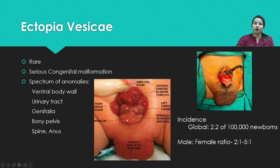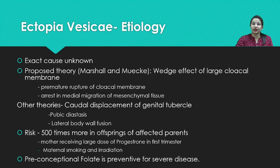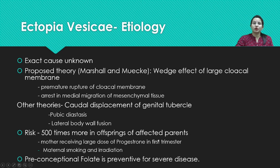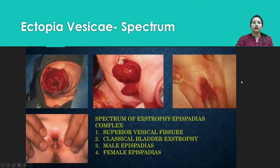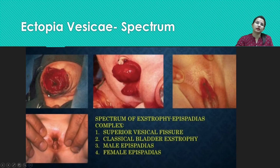These patients also have bifid or splayed glans with epispadias and a dorsally curved penis with a ventrally hooded prepuce. The scrotal folds are displaced, and there is an anteriorly placed anal opening. The exact cause is not known; proposed theories include the wedge effect of the large cloacal membrane or caudal displacement of the genital tubercle. The risk is 500 times greater in offspring of affected parents. Preconceptional use of folate is helpful in preventing ectopic vesica.